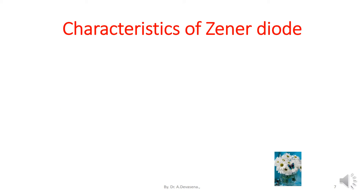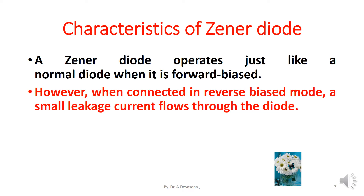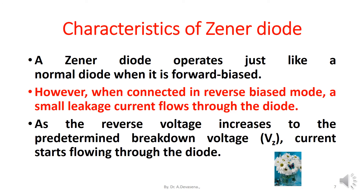Characteristics of Zener diode. A Zener diode operates just like a normal diode when it is forward biased. However, when connected in reverse biased mode, a small leakage current flows through the diode. As the reverse voltage increases to the predetermined breakdown voltage, i.e. V_Z, current starts flowing through the diode.